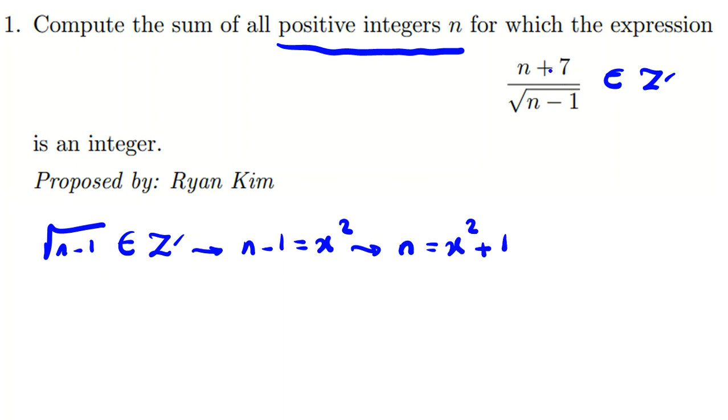So here if we replace, without loss of generality we can consider that x is greater than or equal to zero, because if for some x is negative 2 replace it with 2 and nothing happens. So n plus 1 if I replace x, x squared plus 1 plus 7 over root of x squared minus 1, that x is integer. So x divides x squared plus 1 plus 7 plus 8.